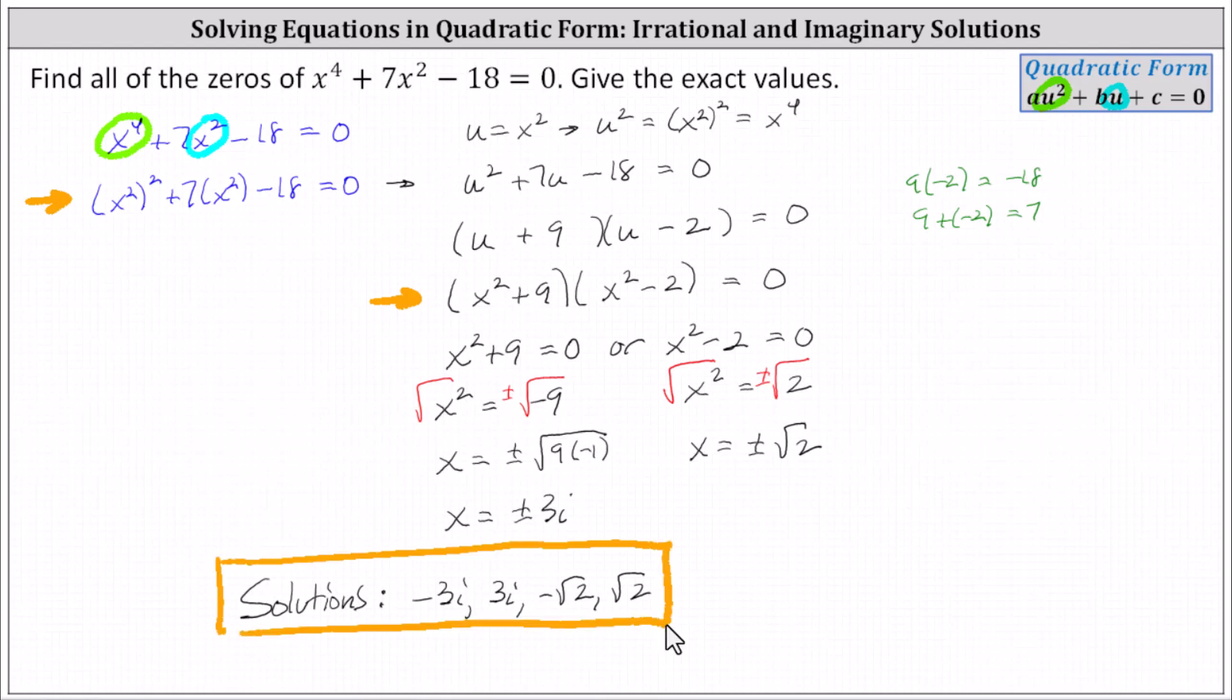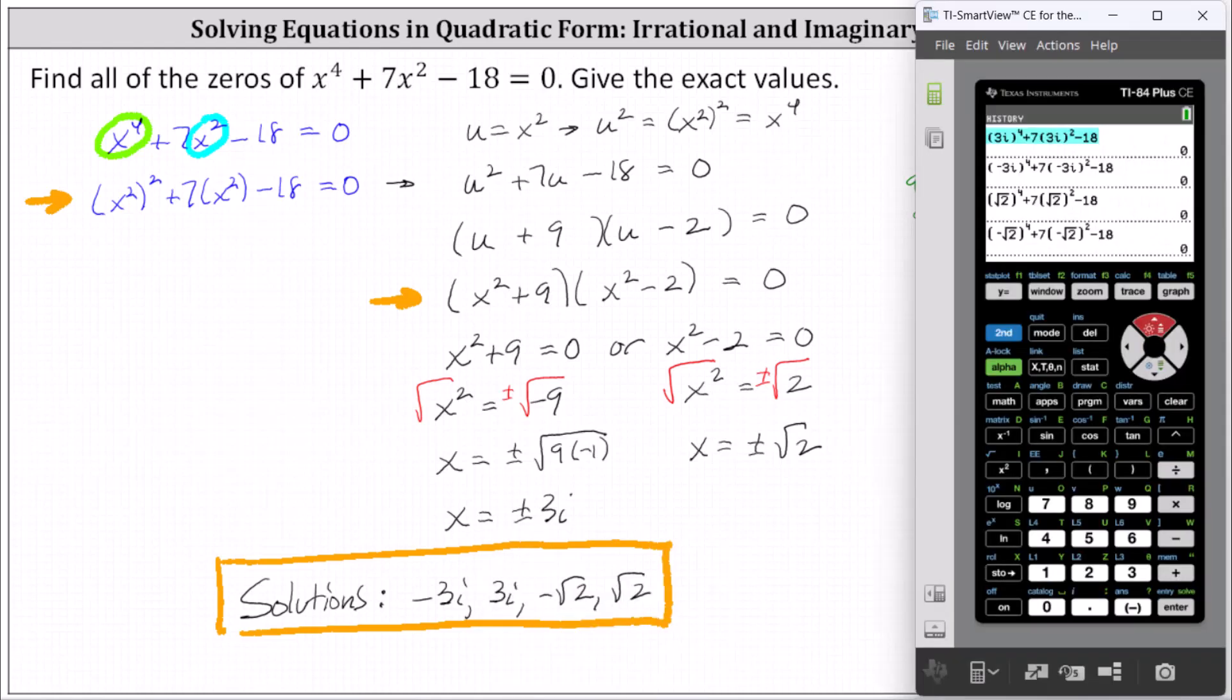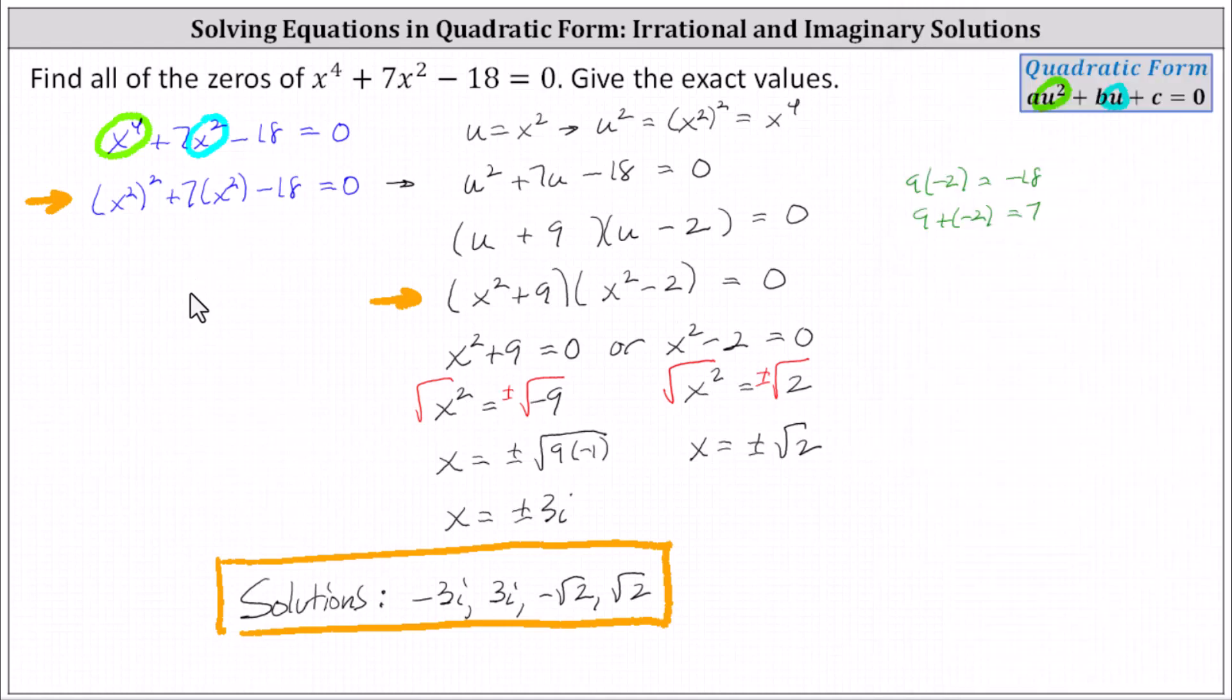Let's verify these solutions actually satisfy the equation. I've already set this up in the calculator. Notice three i, negative three i, square root two, and negative square root two all satisfy the equation. I hope you found this helpful.